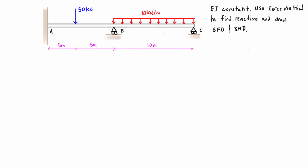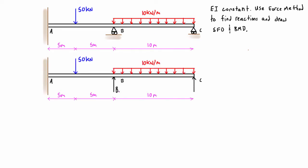We know the reactions are just going to be vertical point loads, so we can draw them as such. Really this problem is just a cantilever beam with too many unknowns. We also know that the deflection at B and at C is going to be zero, because in the actual deflected shape the supports aren't moving. So this thing can be drawn as a cantilever beam with two unknowns and a zero-displacement condition at both B and C.